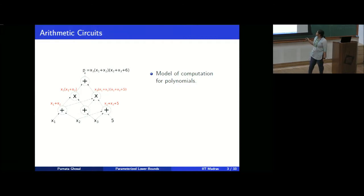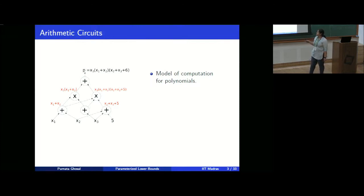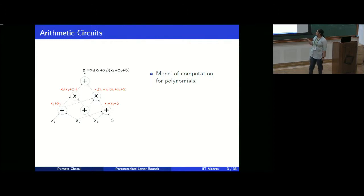These are basically a model of computation for polynomials. They represent polynomials in some way, and the number of wires in the circuit is the measure of size, and the longest path from any leaf node to the output node is the depth.